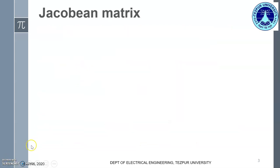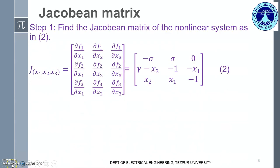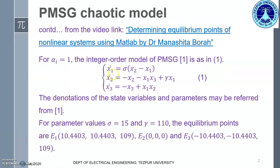Now we begin calculating the eigenvalues in a stepwise manner. The first step is to find the Jacobian matrix of the nonlinear system as given in equation 2. This is a Jacobian matrix corresponding to the state variables x1, x2, and x3. If we consider the expression corresponding to x1 dot from the previous slide, we consider it as f1.